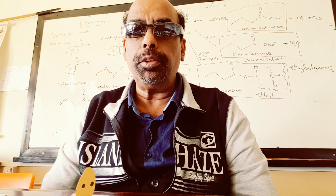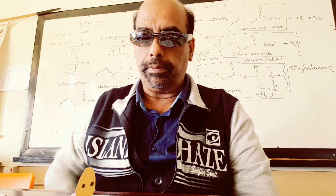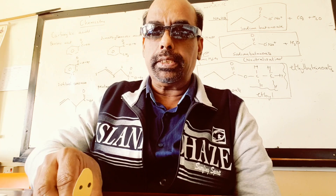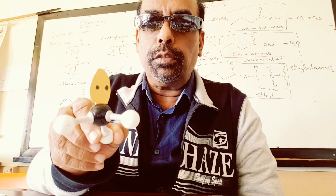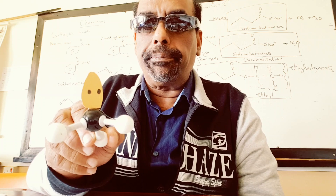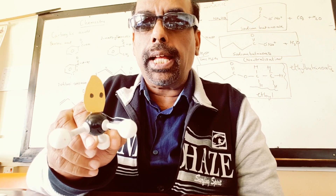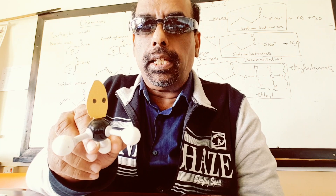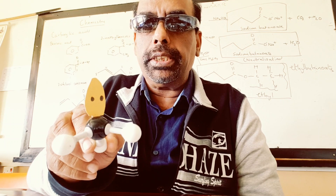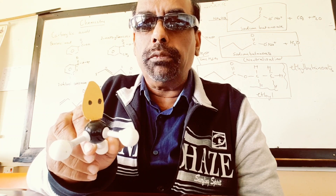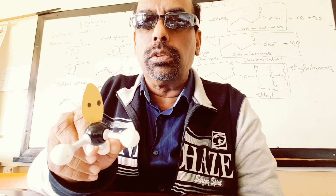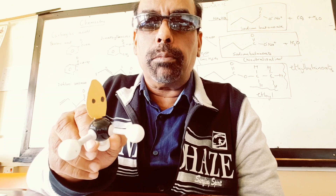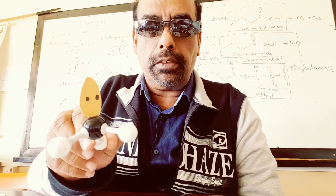Ammonia is made up of ammonia molecules. This is one ammonia molecule. The formula is NH3. It has a molecular mass of 17: 14 for nitrogen, and 3 for the three hydrogen atoms. So the molecular mass of ammonia is 17.